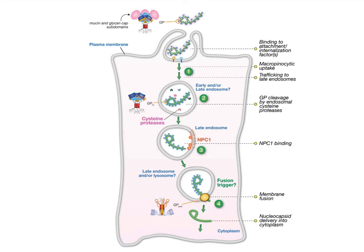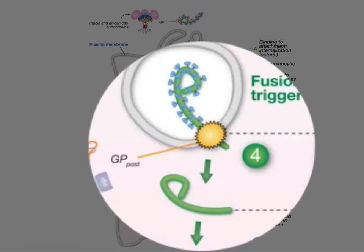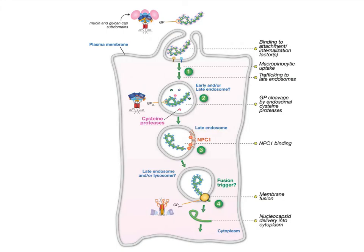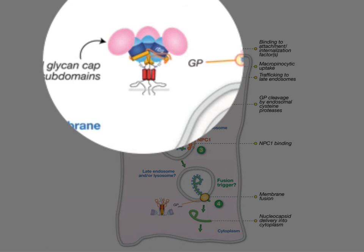That binding is thought to trigger fusion, so that the viral nucleic acid — shown here in the cytoplasm — can get out of the endosome. You have to have cleavage of the glycoprotein in order to have this fusion trigger. The virus can get into the cell with its cap still on, but if it's not cleaved, it will not fuse with NPC1.